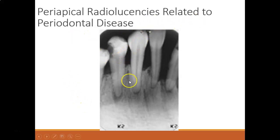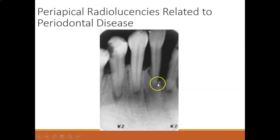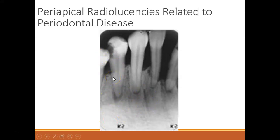Periapical radiolucency can also be related to periodontal disease. When bone loss is happening on the facial, lingual, mesial, or distal and getting close to the apices, there is communication there. You can start to get a periapical abscess due to bone loss around the tooth — communication forms from the outside down to the apex, formulating a periapical abscess with drainage of pus from these periapical lesions.